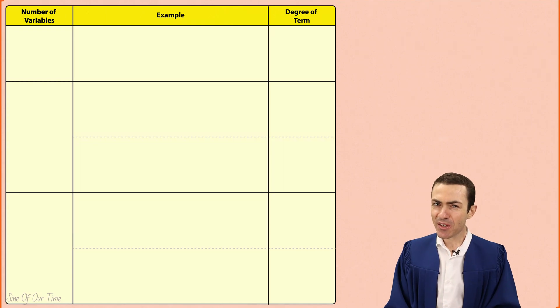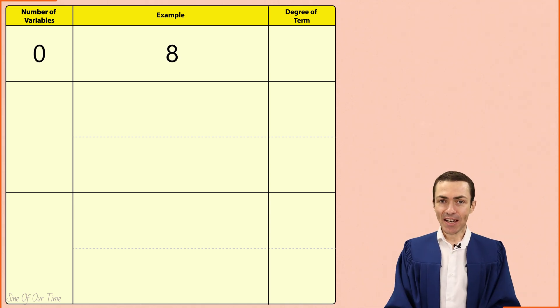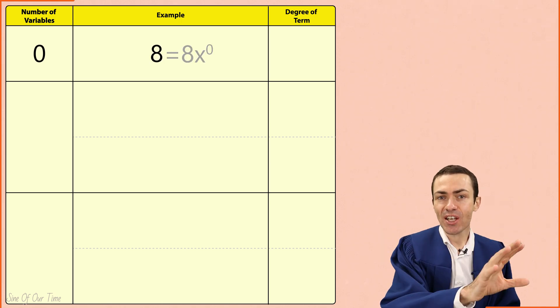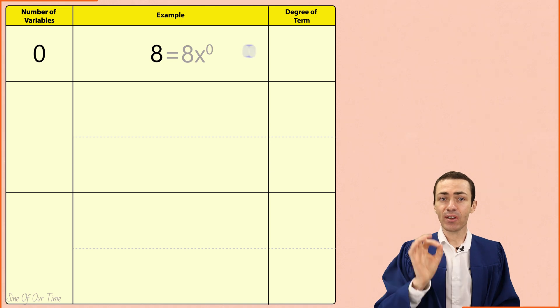It is important to consider all possible scenarios. So let's start by looking at terms that have no variables such as 8. Now 8 can be written as 8x to the power of 0 and that 0 gives this term a degree of 0.